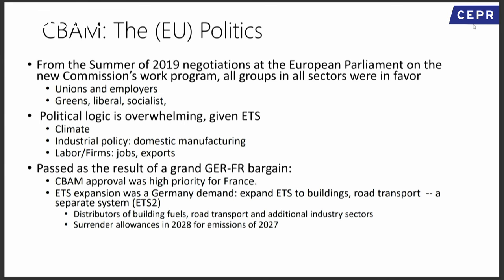It eventually passed as a result of a grand bargain, as always in Europe. The trade-off: the Germans were very much after the extension of the ETS — particularly to households and transport. The French wanted barriers, so the CBAM was something they were very much after. I was surprised that ETS 2 came in — it's a separate system but does extend to buildings and road transport. The reason it works politically is that it's not the households who pay the ETS for their building fuel — it's the fuel distributor.